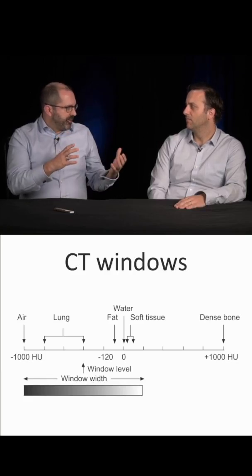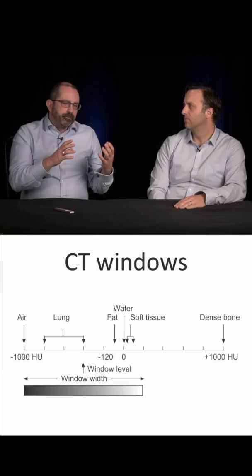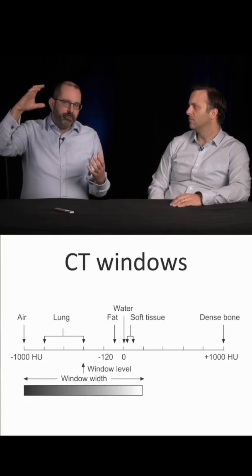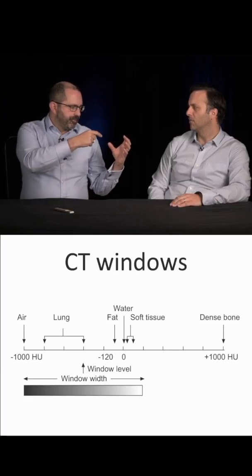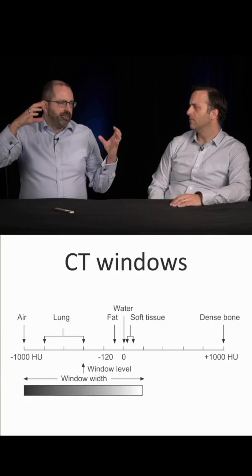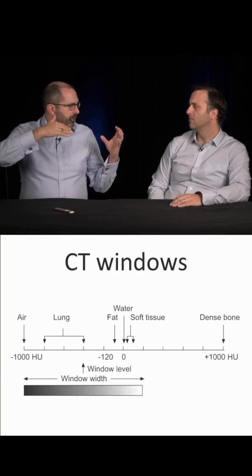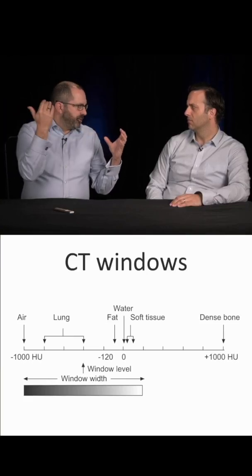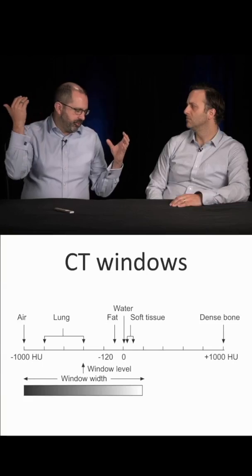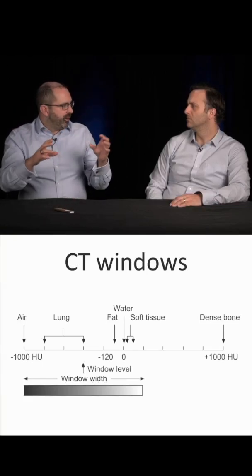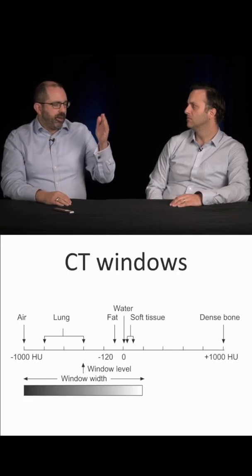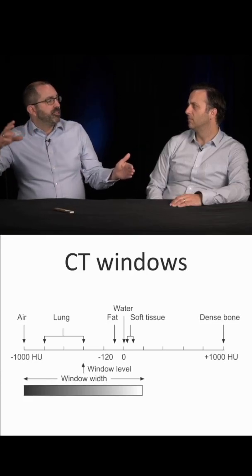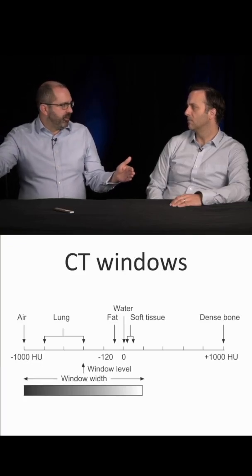When Hounsfield developed the CAT scan in the 60s and 70s, basically what a CAT scan does is it measures x-ray radiation. You have an x-ray emitter and an x-ray detector shooting x-rays across. What the CAT scanner measures is the ability of tissues to either deflect or absorb x-rays. Air lets the most x-rays through — there's no impediment to them. He created the Hounsfield scale, setting air at minus 1,000. Bone deflects the most x-rays, so he set that at 1,000 and put water at zero.